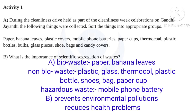The groups are: Biowaste — banana leaves. Plastic — thermocol, plastic bottles, candy covers, paper cups. Glass — glass pieces. Shoes and bags. Hazardous waste — mobile phone batteries, bulbs.